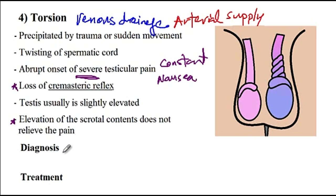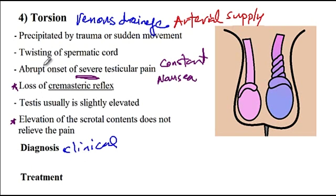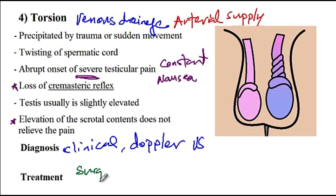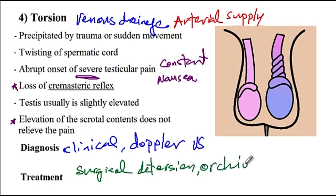In terms of diagnosis, clinical diagnosis is usually accurate because some findings are impossible to miss — severe pain associated with nausea and vomiting, loss of cremasteric reflex, and no pain relief with elevation. If results are equivocal and you cannot distinguish testicular torsion from epididymitis, you can use Doppler ultrasound to confirm the diagnosis. Treatment requires emergent surgical detorsion as well as fixation by orchiopexy.